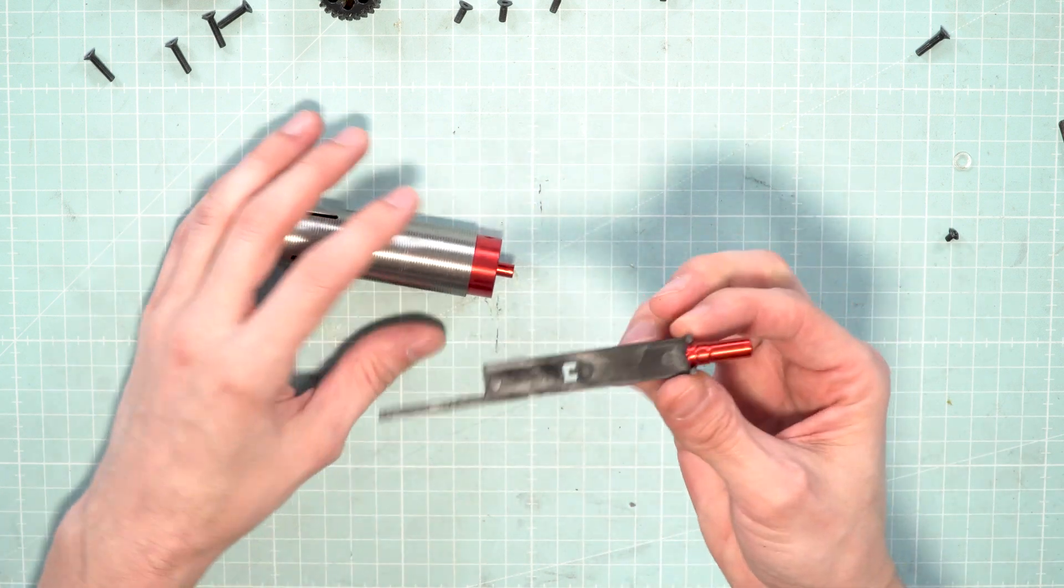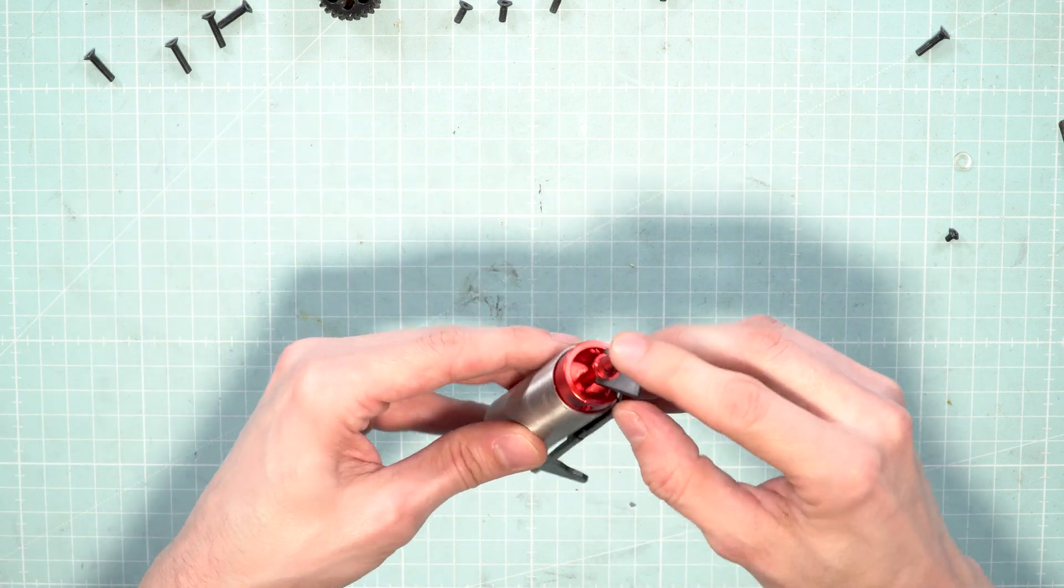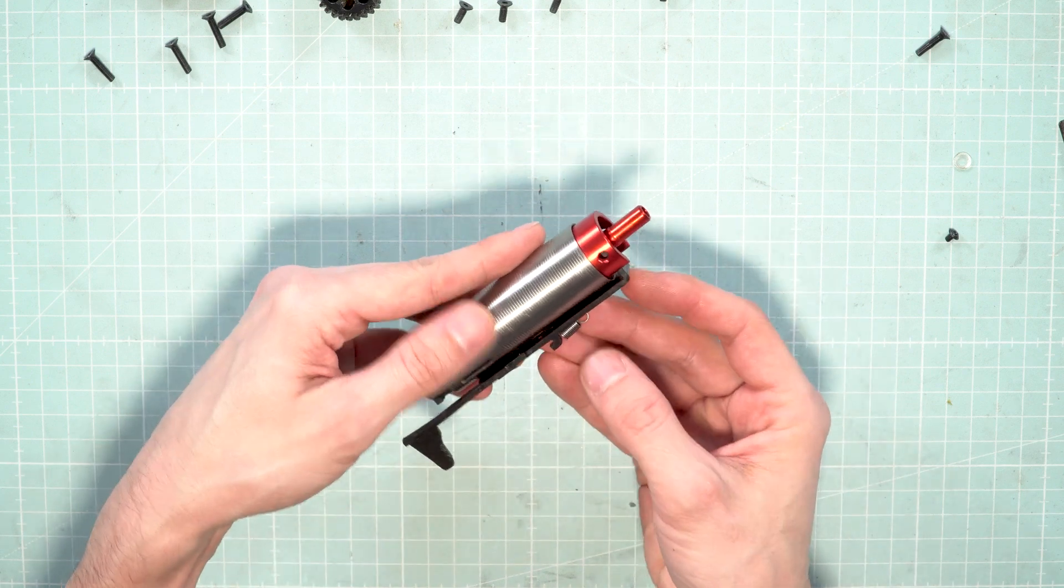The tappet plate actually engages with the nozzle—you can see there is a little groove. Put the spring back on and set aside.